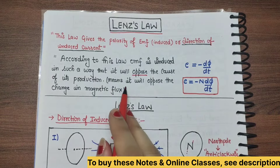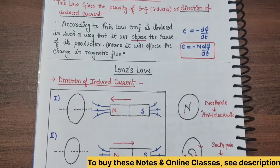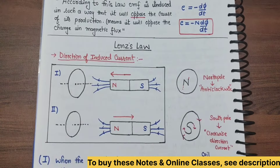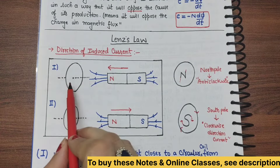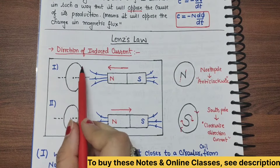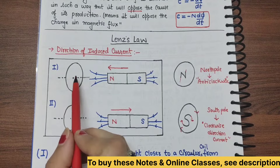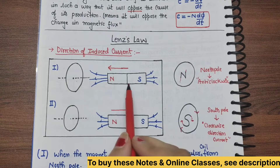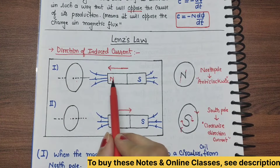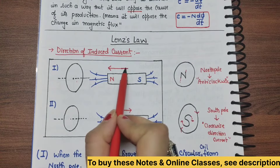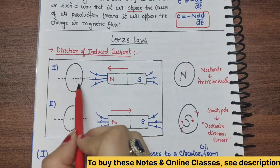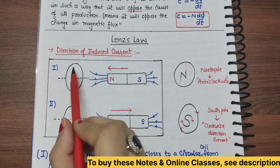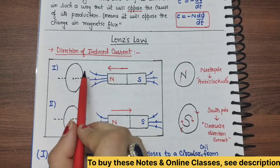So let's see practically how the direction of induced current is determined. First case: we have a coil, and a bar magnet is placed with its north pole facing the coil. We are moving it in the forward direction — that is, closer to the coil.